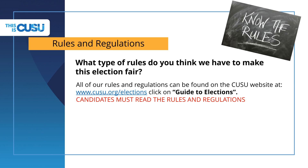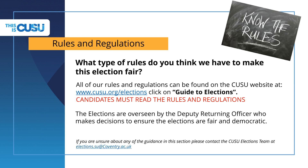The elections process as a whole is overseen by the returning officer, which in our case is an NUS official. However, they need someone specific to the students union to keep an eye on proceedings, so we have a deputy returning officer. Any election complaints are dealt with by the deputy returning officer. If you have any questions about any of the items in this section, please contact the elections team at elections.su@coventry.ac.uk. You can find this and any other links you may need below the video.